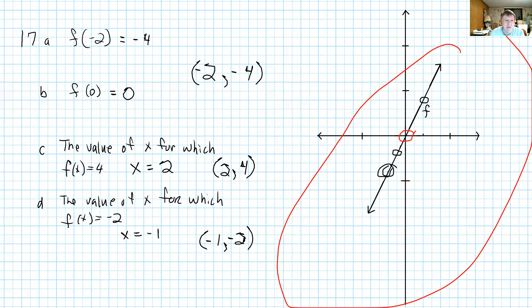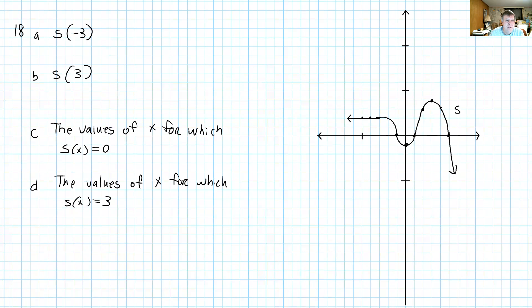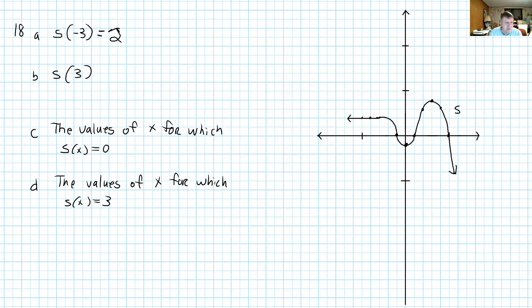Let's take a look at another example — basically the same thing but with a different graph. This is the function called s. We're supposed to find s of negative 3, so find the corresponding y value when x is negative 3. x equals negative 3 is right here, and the corresponding y value is 2. So s of negative 3 equals 2. Then it says find s of 3 — when x is 3, y is 4.